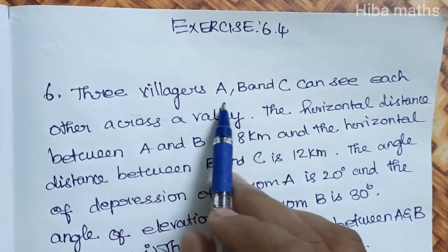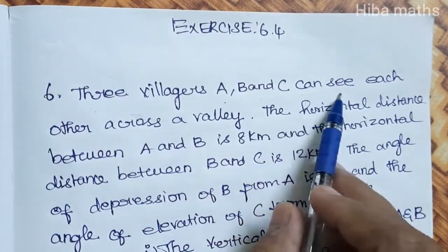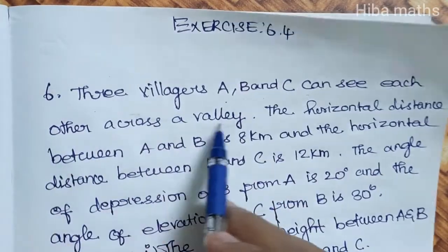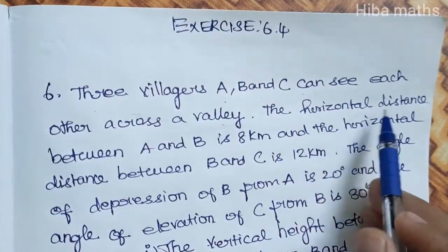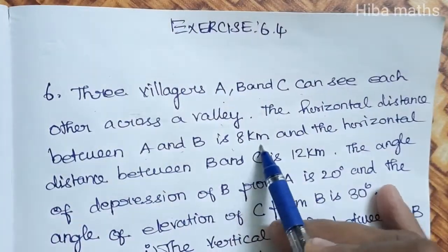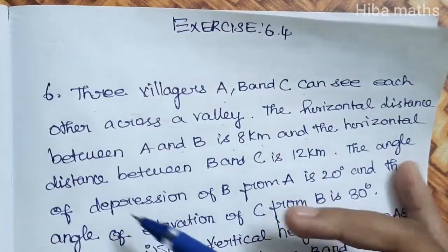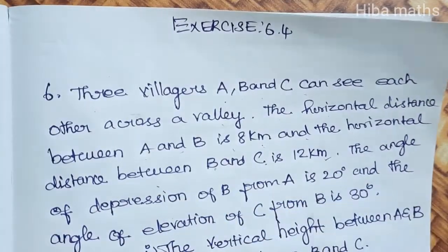Three villages A, B and C can see each other across a valley. The horizontal distance between A and B is 8 km and the horizontal distance between B and C is 12 km.